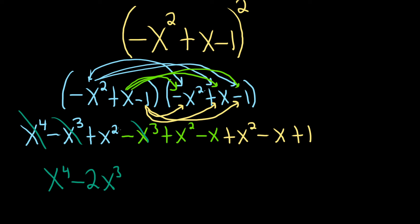x squared. So it looks like we have x squared plus x squared plus x squared. That's 3x squared. And we have negative x minus x. That's negative 2x. And the 1 remains at the end, so plus 1. And that would be the final answer to the problem.